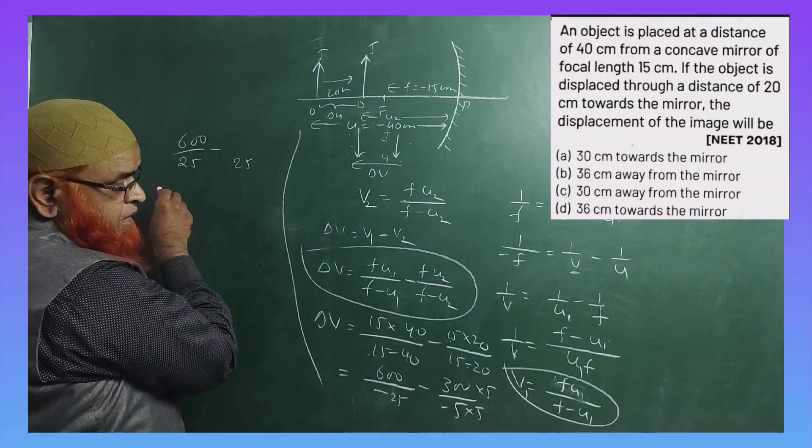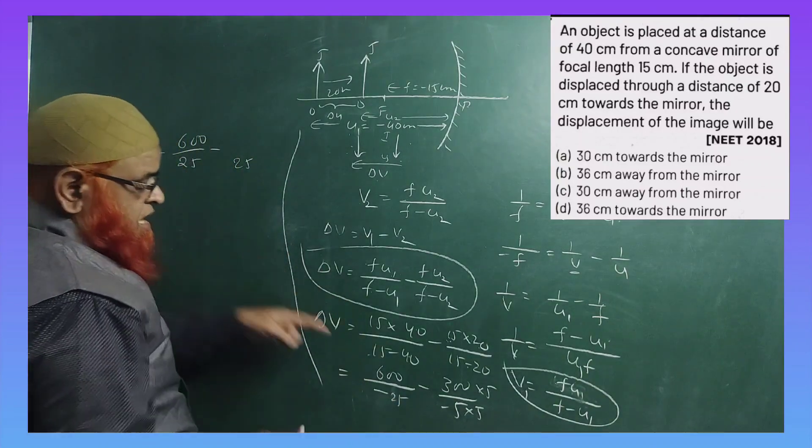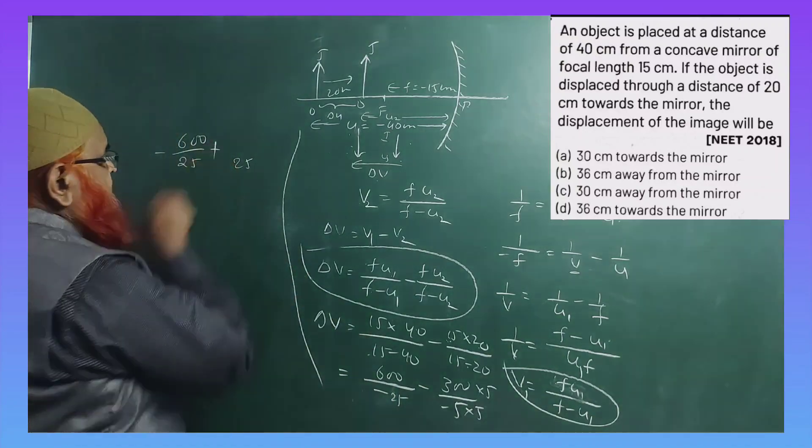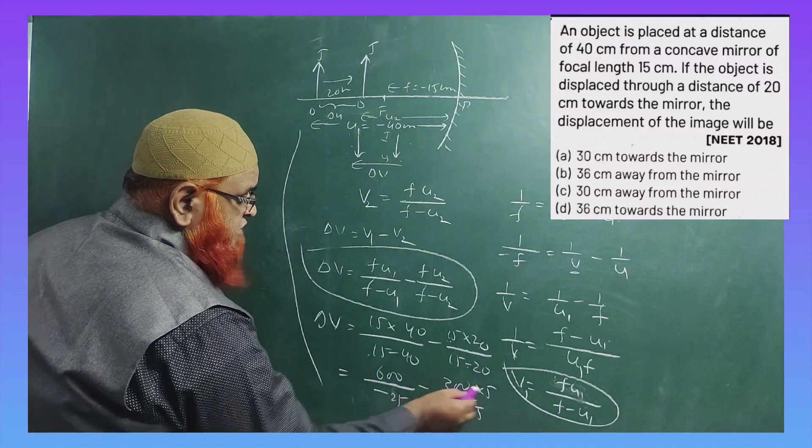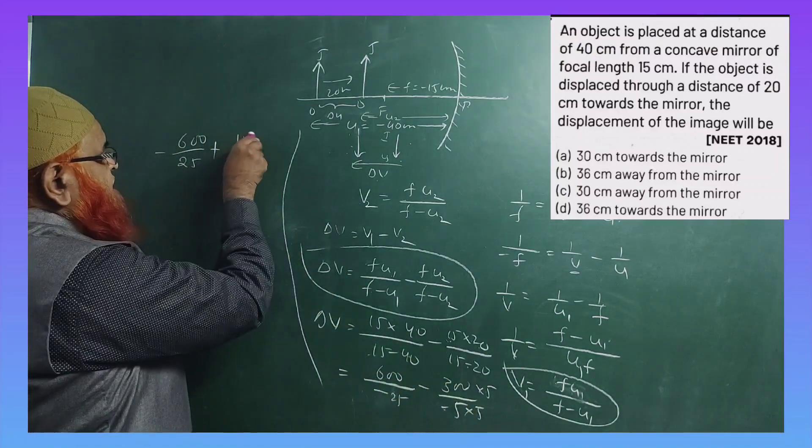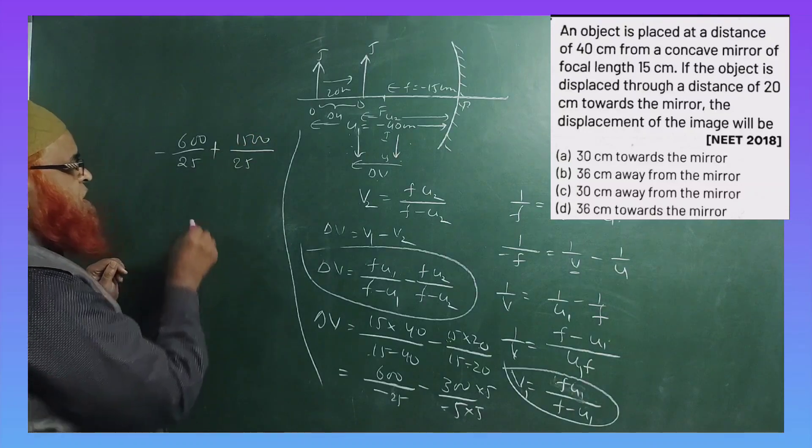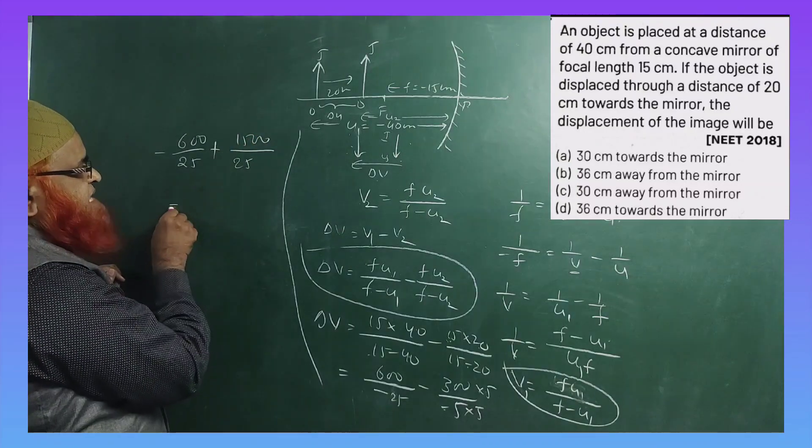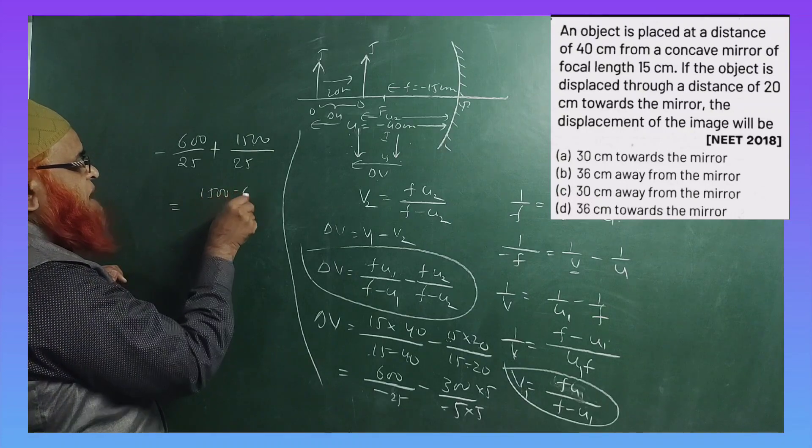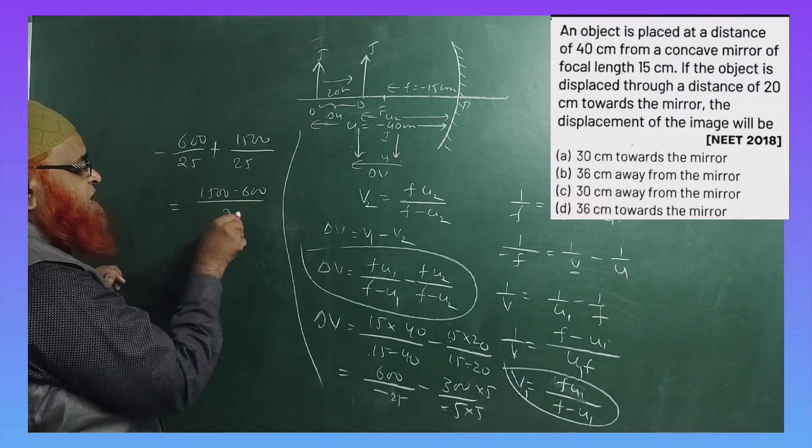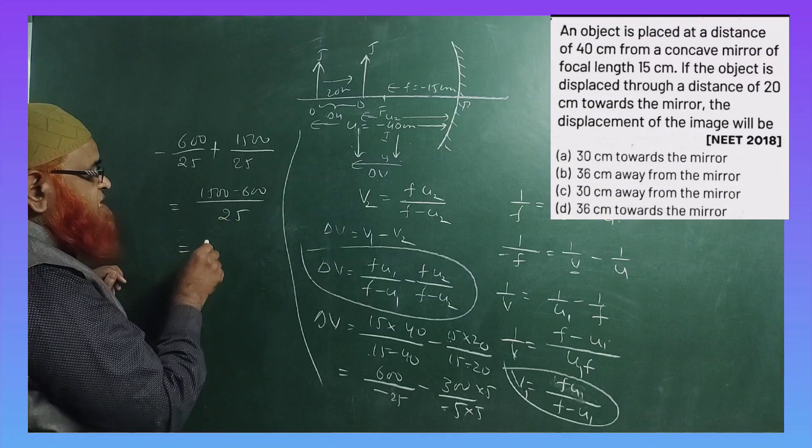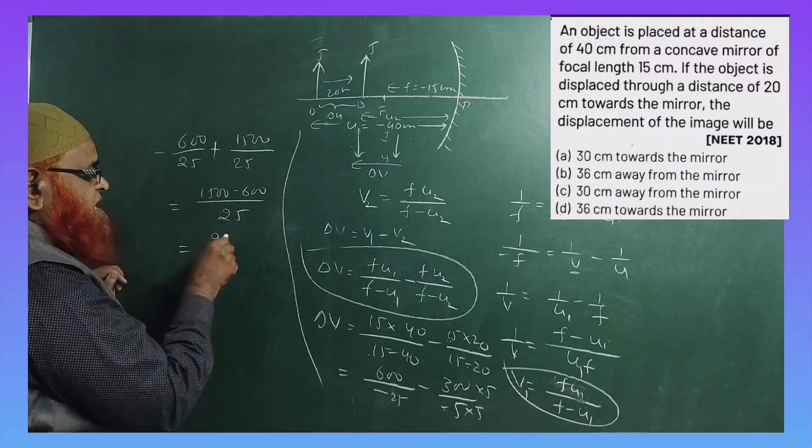So 25 will become common. This is minus and minus of minus will become plus here. 5×3 is 15, so you'll be getting 1500 divided by 25. So you'll be getting the answer as 1500 minus 600 divided by 25. So your answer is going to become 900 by 25, so 36 centimeters you'll get directly.